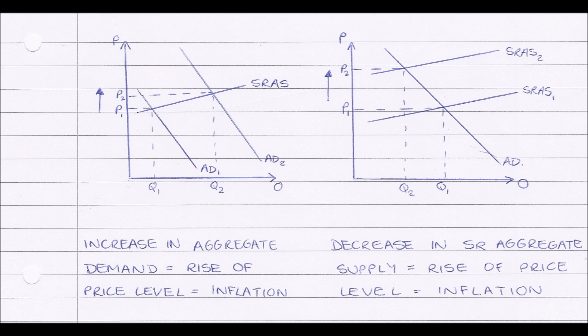And this is the same idea if aggregate supply decreases. If our short run aggregate supply curve decreases, so our curve shifts upwards from SRAS1 to SRAS2, then the price level has increased from P1 to P2, so therefore inflation has occurred.